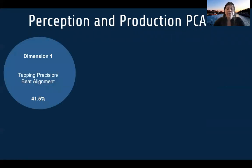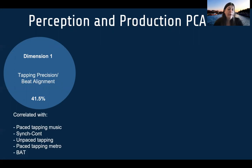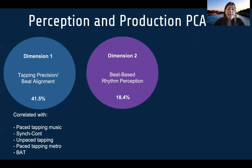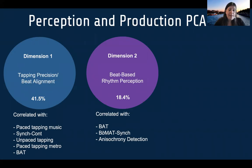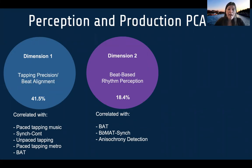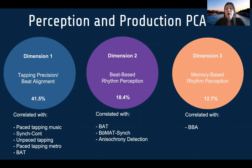From the perception-and-production PCA, we found three dimensions. The first corresponded to tapping precision and beat alignment, correlating with all the tapping tasks as well as the BAT. The second was more beat-based rhythm perception, correlating with the BAT, the BMAT sync, and the anisochrony detection task. The third dimension was specific to memory-based rhythm perception, correlating with the BBA same-different task.